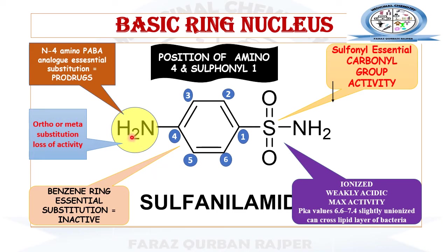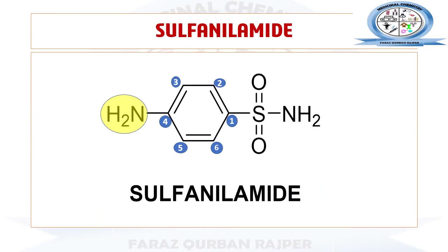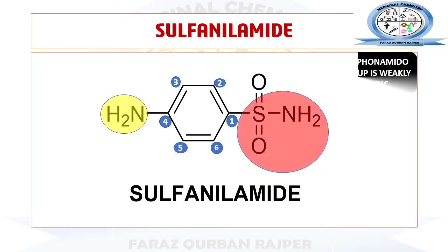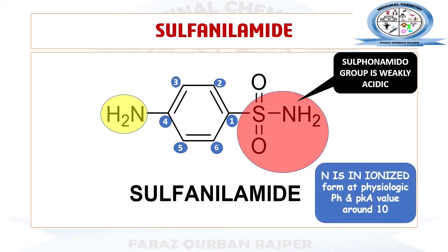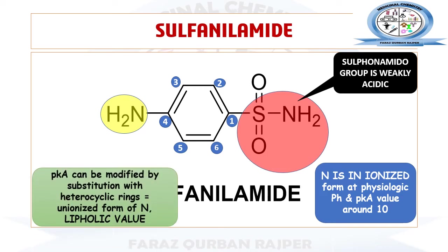At the fourth position, if we substitute the para-position amino group to the ortho or meta position, it will also result in loss of activity of the sulfonamide drug. The sulfonamide functional group at position one is responsible for the weakly acidic properties, and at physiological pH its pKa is around 10. Different derivatives are formed to modify this pKa value.